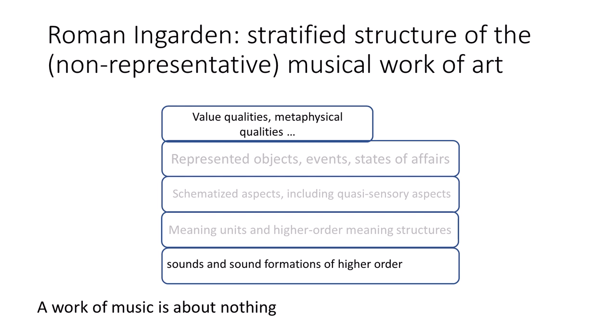Music has only two aspects, or in some cases only one. We're talking about symphonies and so forth, not opera. Some works of music have value qualities, a kind of metaphysical quality about them. But basically what music is characterized by is not word sounds but sound — a work of music is a sound formation.